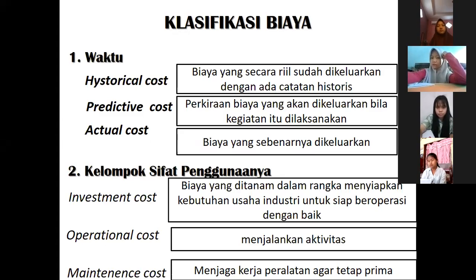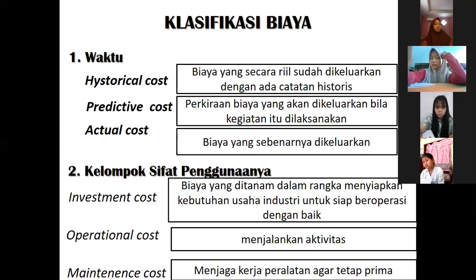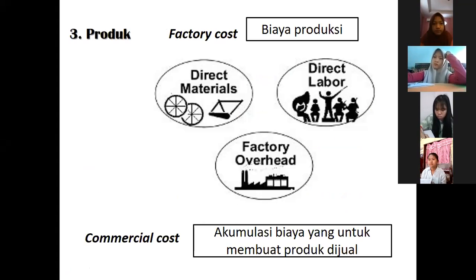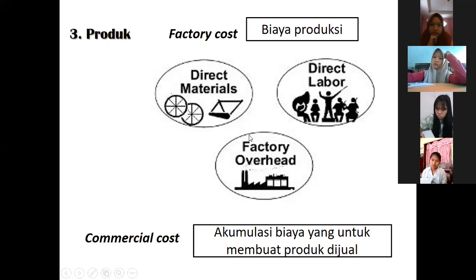Ada kelompok sifat penggunaannya: ada investment cost, ini biaya yang ditanamkan dalam rangka untuk menyiapkan kebutuhan usaha industri. Ada operasional, ini biaya operasional untuk menjalankan aktivitas. Terus ada maintenance, ini biaya yang dikeluarkan untuk merawat suatu alat atau mesin. Yang ketiga, produk: ada direct material ini biaya untuk membeli bahan bakunya untuk produksi, direct labor ini biasanya upah pekerja, dan faktor operasional ini semua biaya yang dikeluarkan di pabrik tapi tidak mencakup biaya material langsung. Ada commercial cost, ini di luar dari tiga ini, kayak misalnya kita mau promosi suatu barang, itulah commercial cost untuk iklan-iklan.